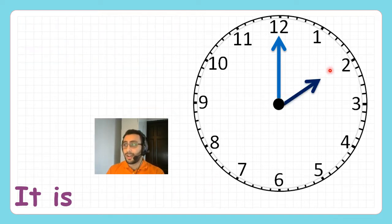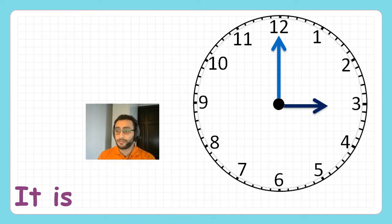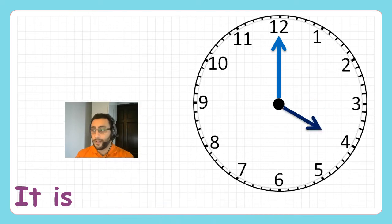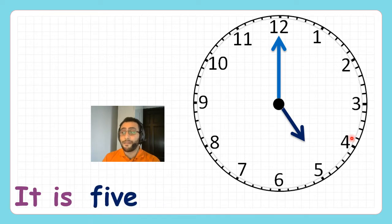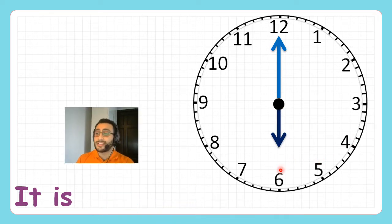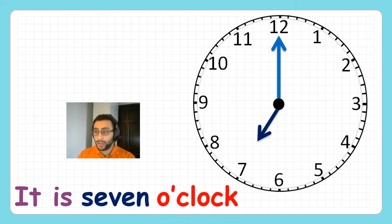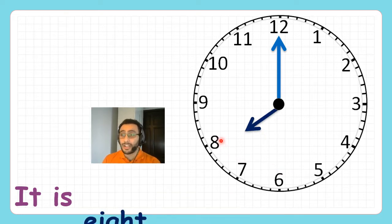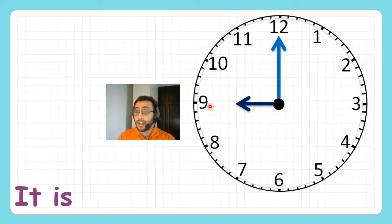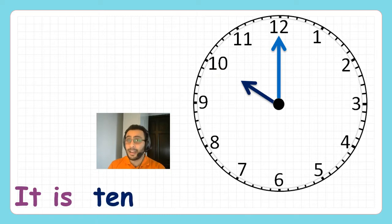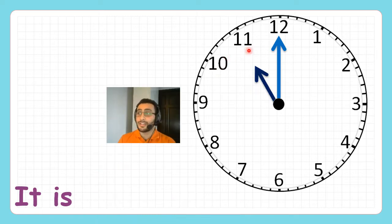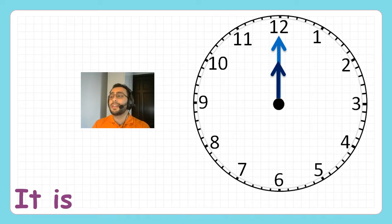What time is it now? It is two o'clock. It's pointing at three, so it's three o'clock. It is four o'clock. It is five o'clock. It is six o'clock. It is seven o'clock. It is eight o'clock. It is nine o'clock. It is ten o'clock. It is eleven o'clock. And lastly, if it's like this, it is twelve o'clock.